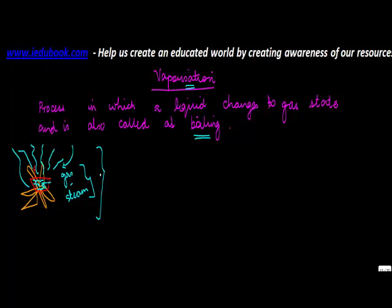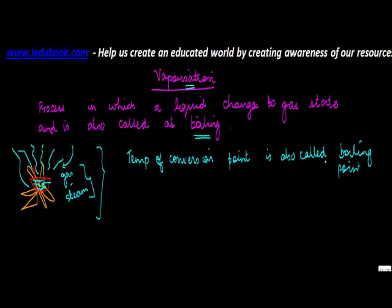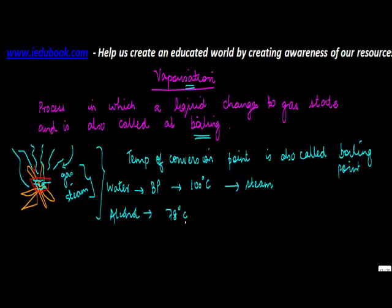This process is known as boiling or vaporization. Just like in the case of melting, different substances have different temperatures at which they convert from liquid to gas. This conversion temperature is called the boiling point. For water, the boiling point is 100 degrees Celsius, and for alcohol it is 78 degrees Celsius.